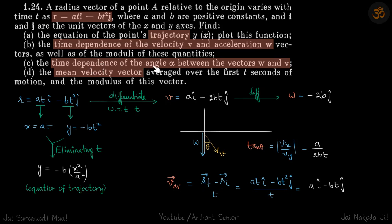Then time dependence of the angle between vectors w and v. So if you just plot it, you will see that acceleration is downwards minus 2b. And velocity is in fourth quadrant. The x component is positive and y component is negative. So it will be like this. He's asking the angle theta.